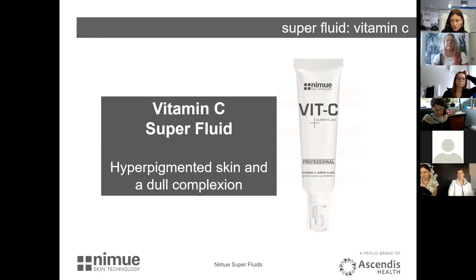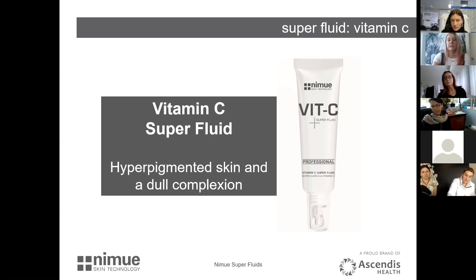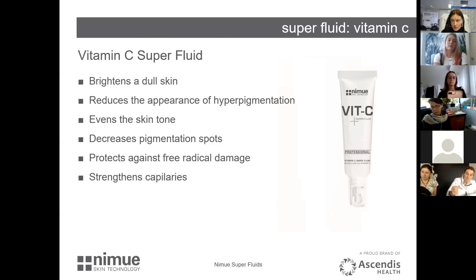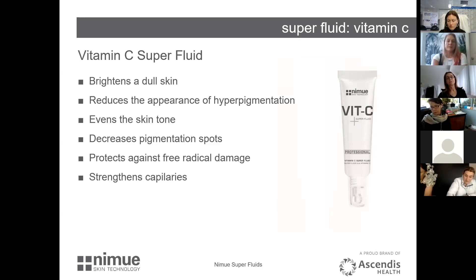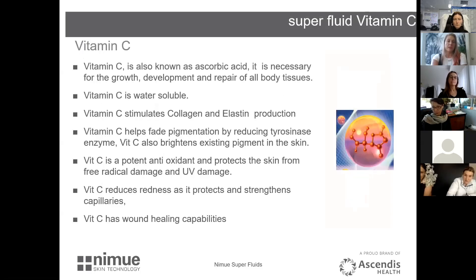Moving on to vitamin C — this is an ingredient clients will come in asking for. We give this primarily to hyperpigmented skins and dull complexions. The benefits of the vitamin C super fluid: it brightens, reduces the appearance of hyperpigmentation, evens skin tone, decreases pigmentation spots, is a potent antioxidant, and helps strengthen capillary walls. It will actually help to rebuild those capillaries and reduce redness in the skin.